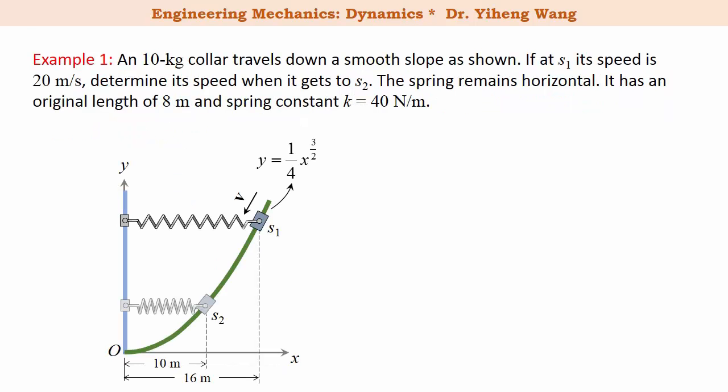Let's look at this example. We have a 10 kg collar connected to a spring that travels down a smooth slope. If initially it has a speed of 20 m/s, we need to determine its speed when it gets to the second state. Since the slope is smooth, we can neglect friction. Therefore the only forces doing work to this collar are its weight and the spring force, both of which are conservative forces. Therefore we can apply the conservation of energy to solve this problem. Let's first calculate the total energy of the collar at state one, which includes its kinetic energy and its total potential energy.